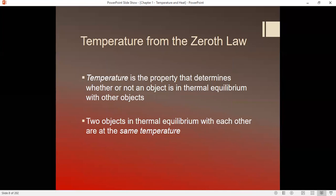So temperature is the property that determines whether or not an object is in thermal equilibrium. They have the same temperature, they're in thermal equilibrium. If the two objects have a different temperature, then heat will naturally flow from the hotter object to the colder object.